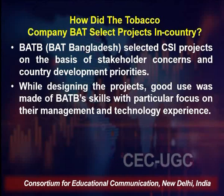The question comes: how did this tobacco company BAT select a project in that country? What is the criteria? They have a very well-defined criteria. They selected these projects on the basis of stakeholder concerns and the country's development priorities. These are two important parameters for selecting a project. One is: what are the stakeholder concerns? Each and every party directly or indirectly connected with the company is a stakeholder — customers, suppliers, competitors, banks, and of course the government. They decide on the basis of concerns raised by the stakeholders.